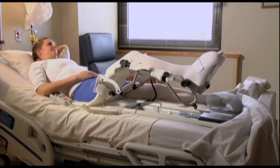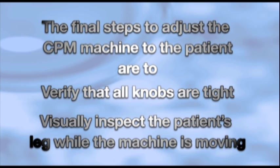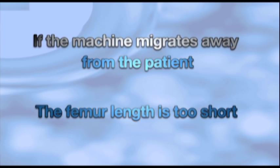The final steps in adjusting the CPM machine to your patient is to verify that all knobs are tight and to visually inspect the patient's leg while the orthosis is moving. If you notice the patient's foot lifting out of the foot cup or boot, the femur length is likely too long. If the machine migrates or scoots away from the patient, the femur length is likely too short.